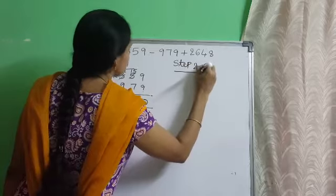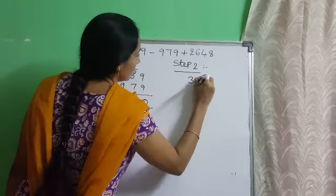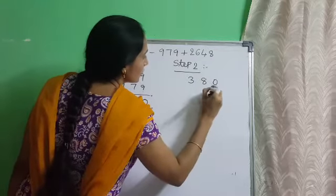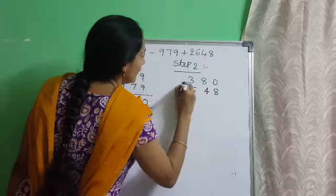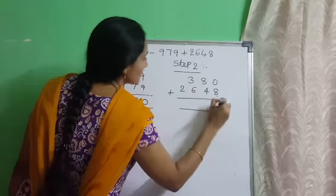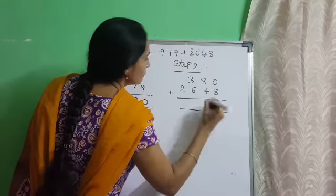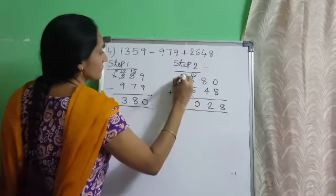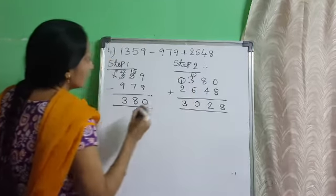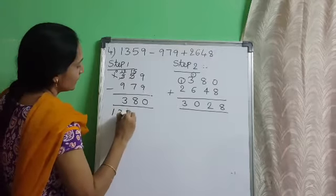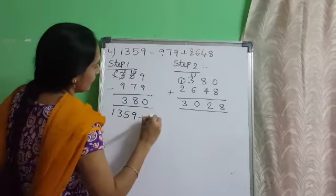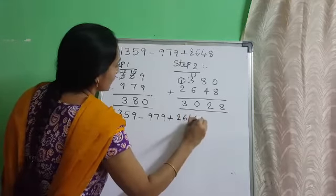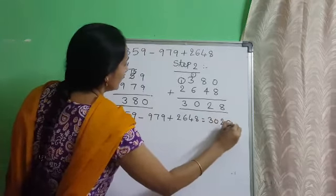Step 2: add the third number 2648 to the difference 380. 0 plus 8 is 8. 8 plus 4 is 12, carry 1. 1 plus 3 is 4. 4 plus 6 is 10, carry 1. 1 plus 2 is 3. The answer is 3028. So 1359 minus 979 plus 2648 is equal to 3028.